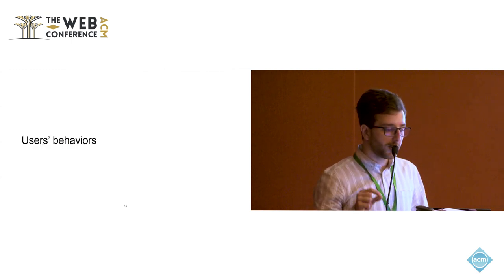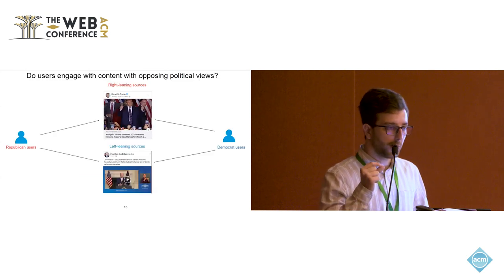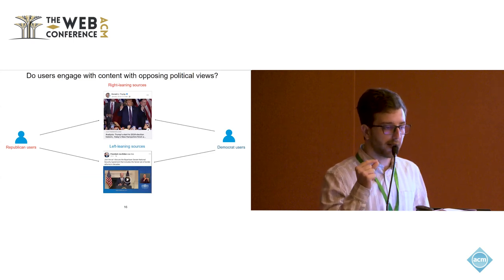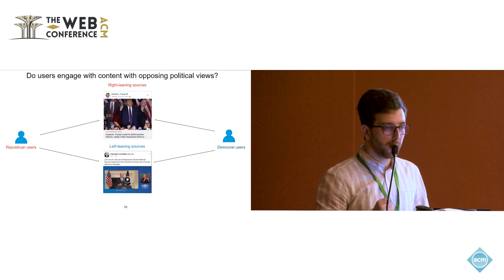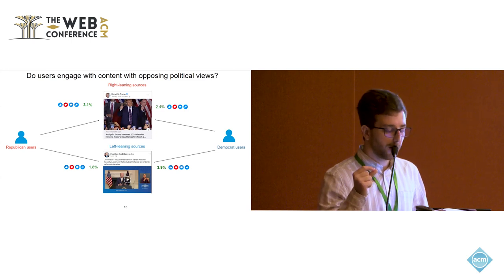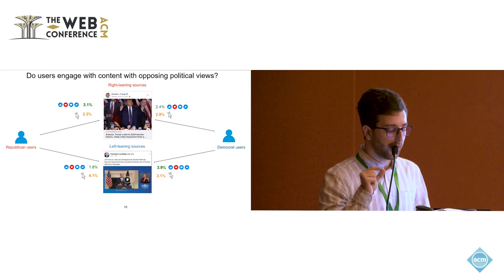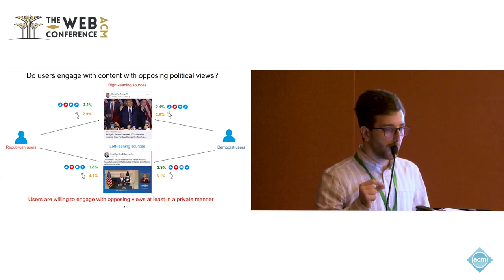Finally, we measure how users behave when consuming news content on Facebook. The first thing we analyze is whether users engage with content from opposing political views. Given a Republican user and a Democrat user, we see how they interact with right-leaning Republican sources and how they interact with left-leaning Democrat sources. When we look at visible interactions — those visible to their friends — we find, as expected, that Republican users are more likely to interact with right-leaning sources and Democrat users with left-leaning sources. However, when we look at hidden interactions, we surprisingly find that Republicans are more likely to perform these interactions with left-leaning sources. This suggests that users are willing to engage with opposing views, but in a private manner not visible to their audience.